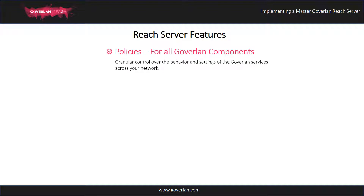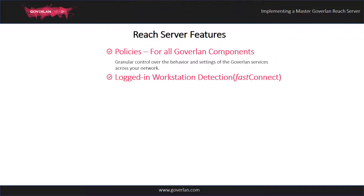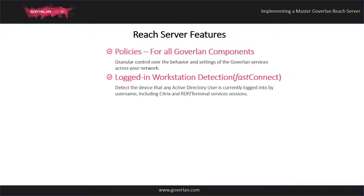For example, setting a policy to display a user acceptance prompt before a remote control session starts. The second is logged-in workstation detection, also known as FastConnect. The Reach Server will log and monitor all live sessions that are active on every machine in your network that have the Goverland agent installed.